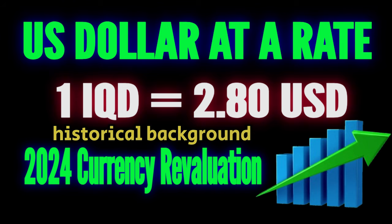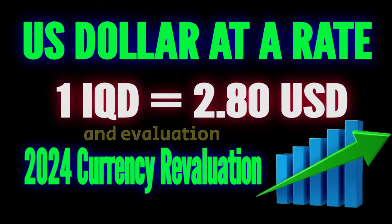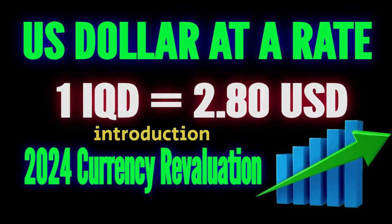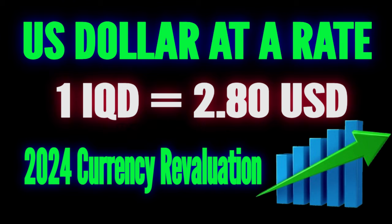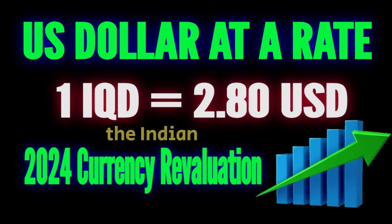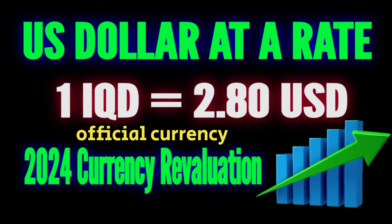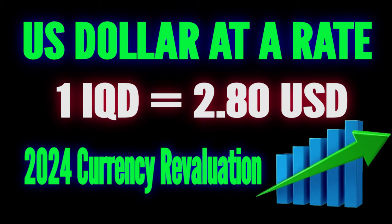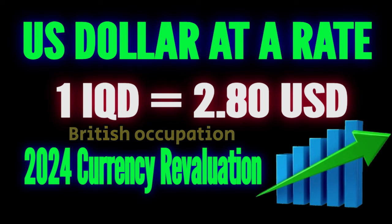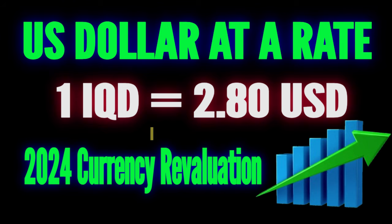Historical Background and Evaluation: Introduction and Early History. The Iraqi dinar replaced the Indian rupee as the official currency in 1932, following the British occupation during World War I.